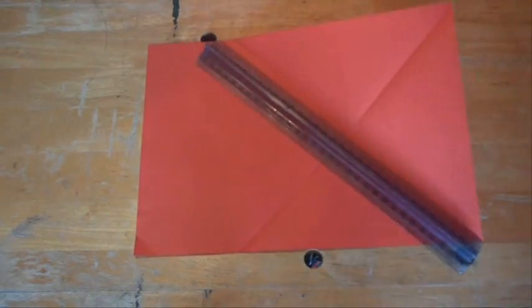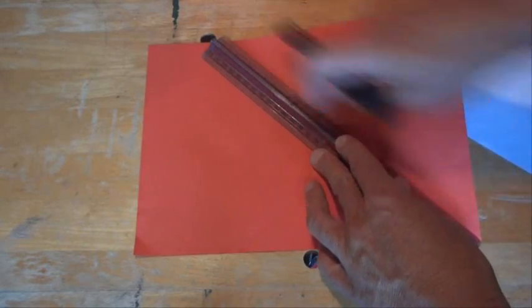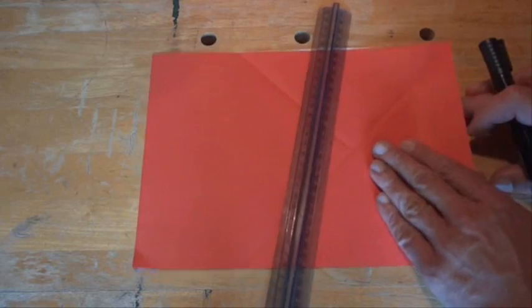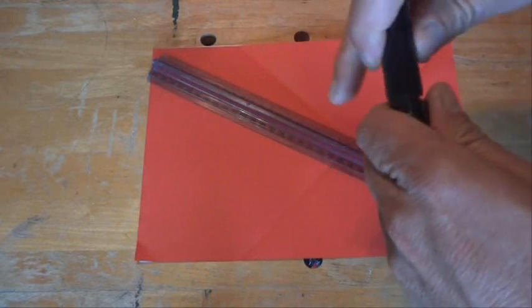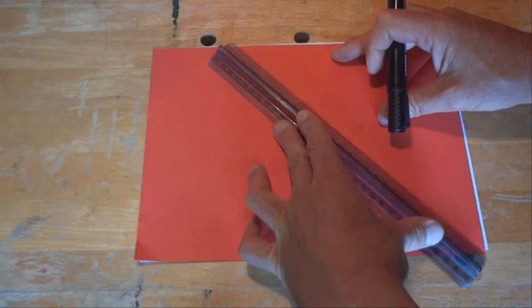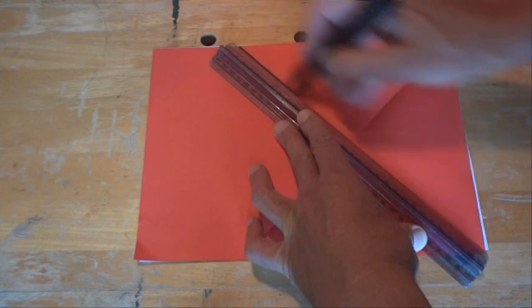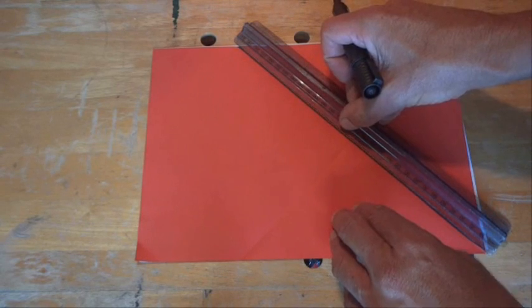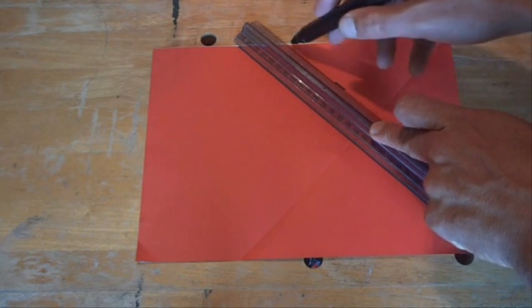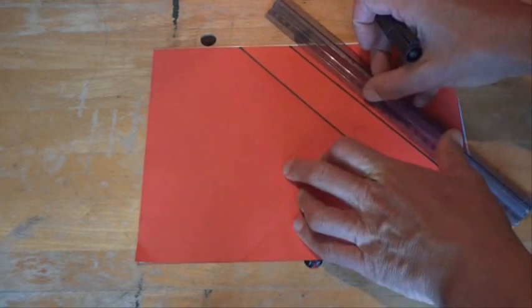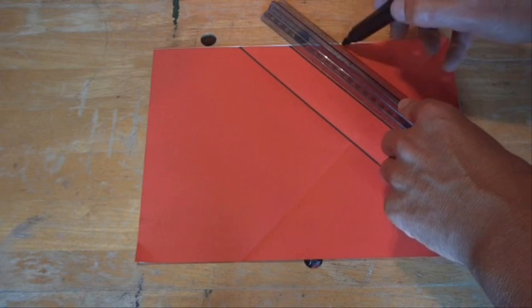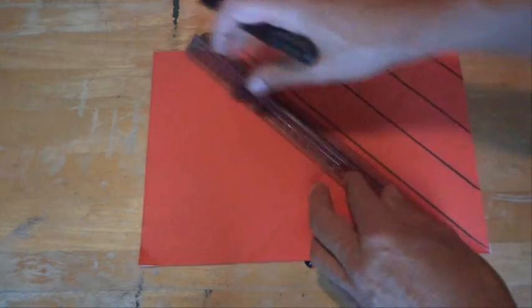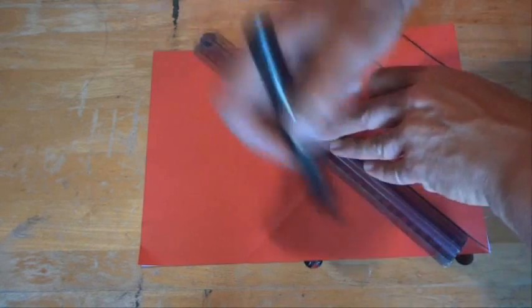Now we're just going to get a ruler and a permanent marker, and we're just going to mark some diagonal lines one way, and turn it around and mark some diagonal lines the other way. I'm just going to put a bit of paper underneath that, because the permanent marker is likely to come through the red paper and mark the table underneath. So I've got a bit of paper to catch those marks coming through. And then we'll just line that ruler up with that one. So we'll be drawing diagonal parallel lines across the paper. And if we line the ruler up with the line we've just marked, we'll get a perfectly parallel line each time.